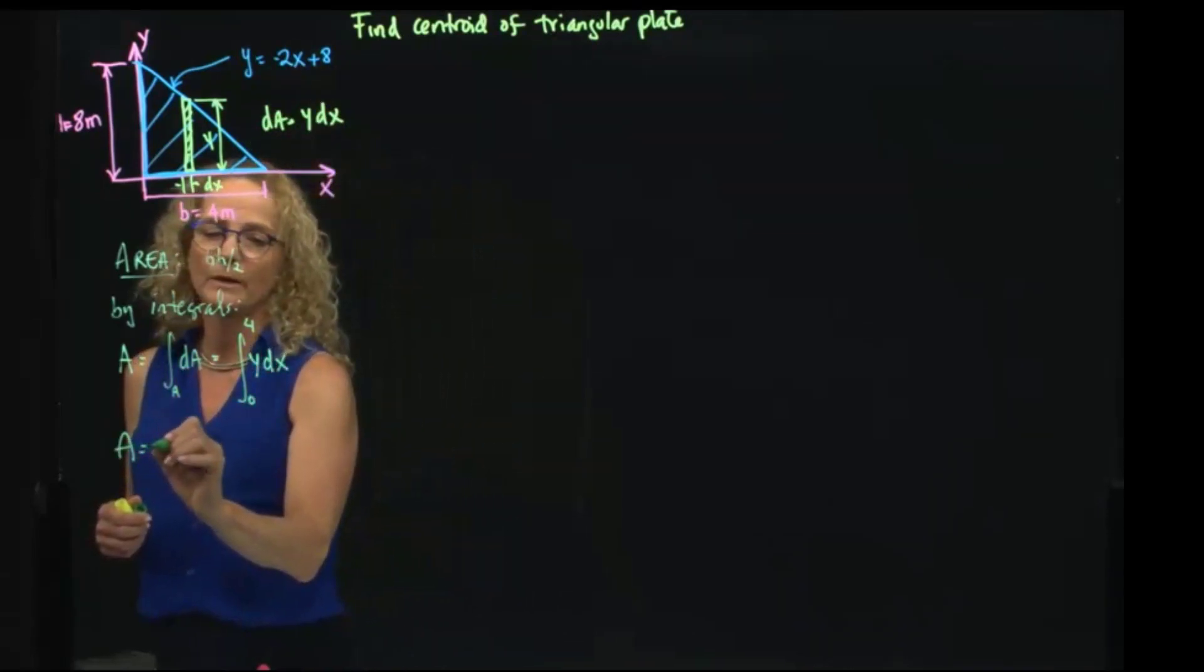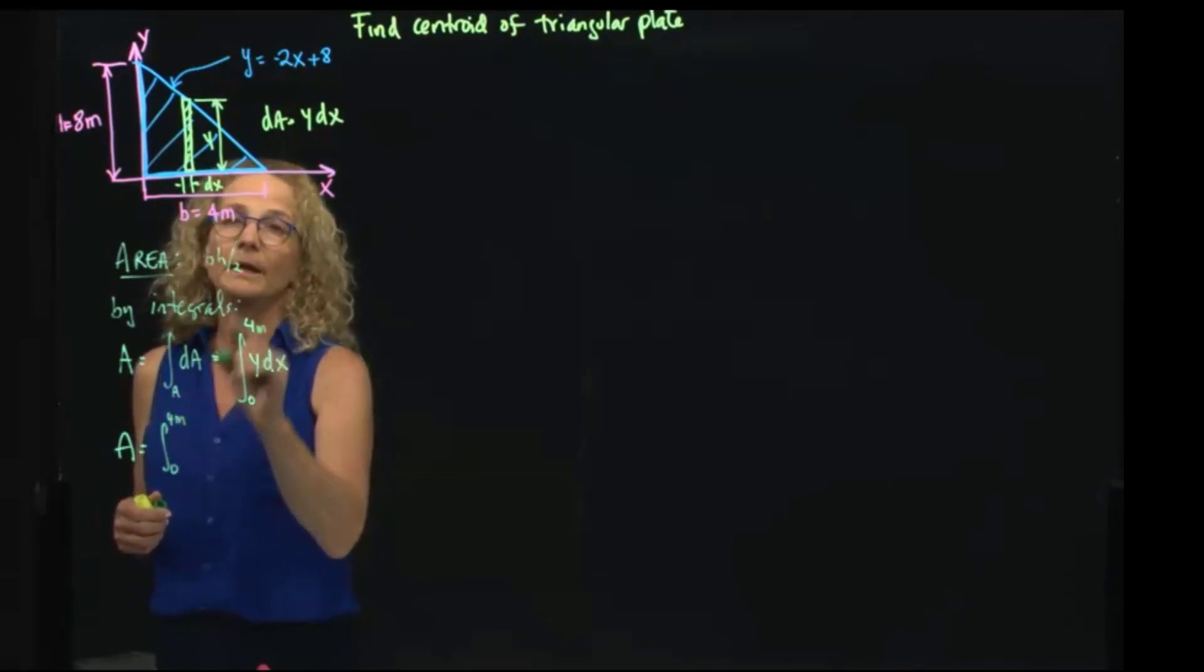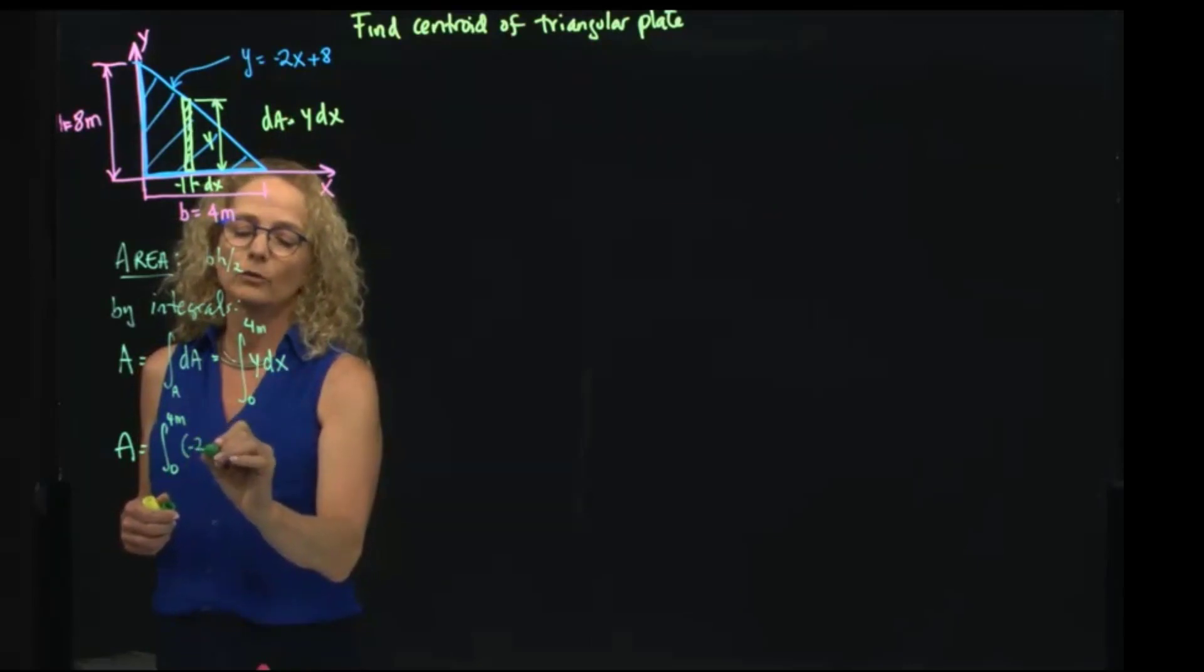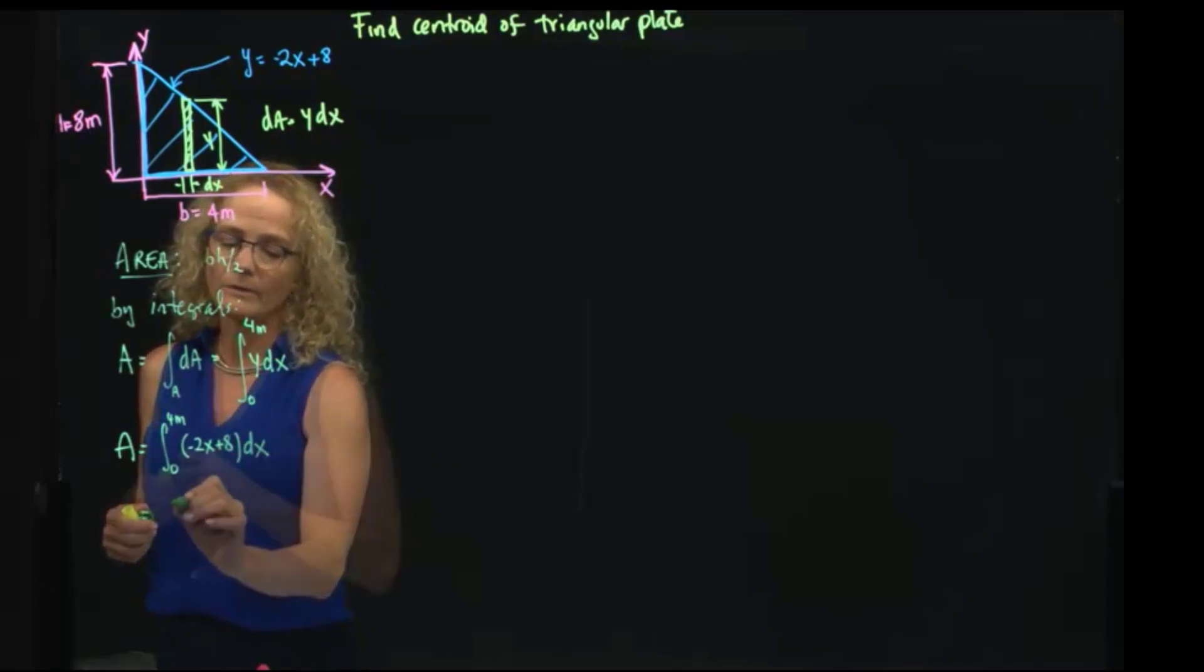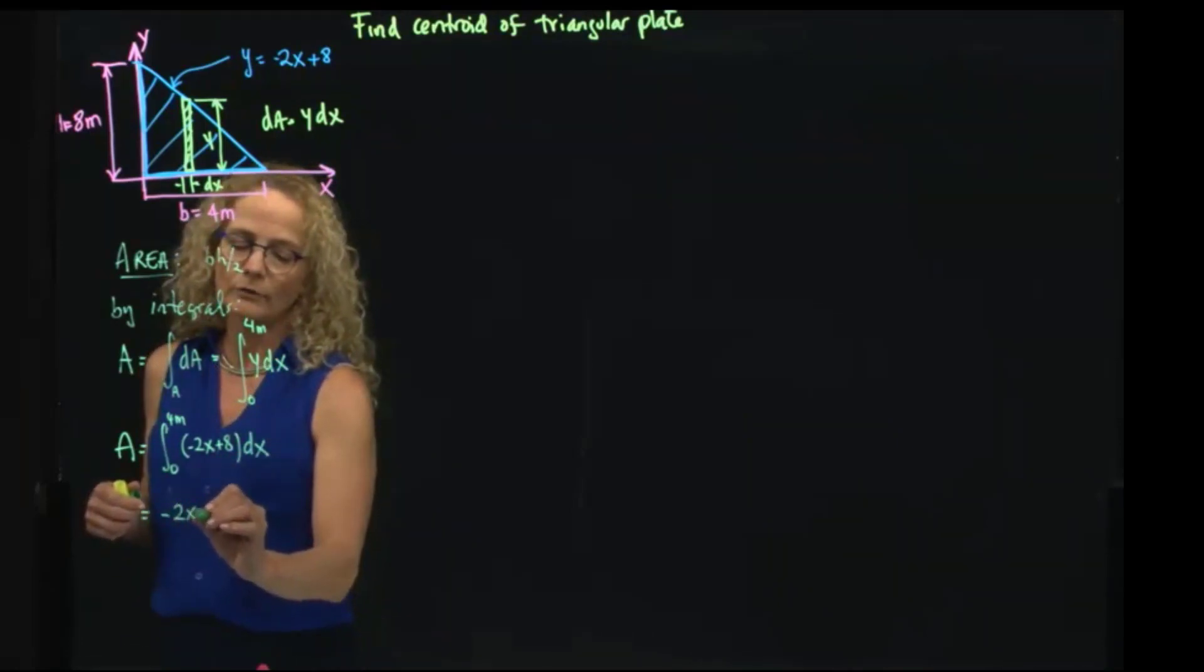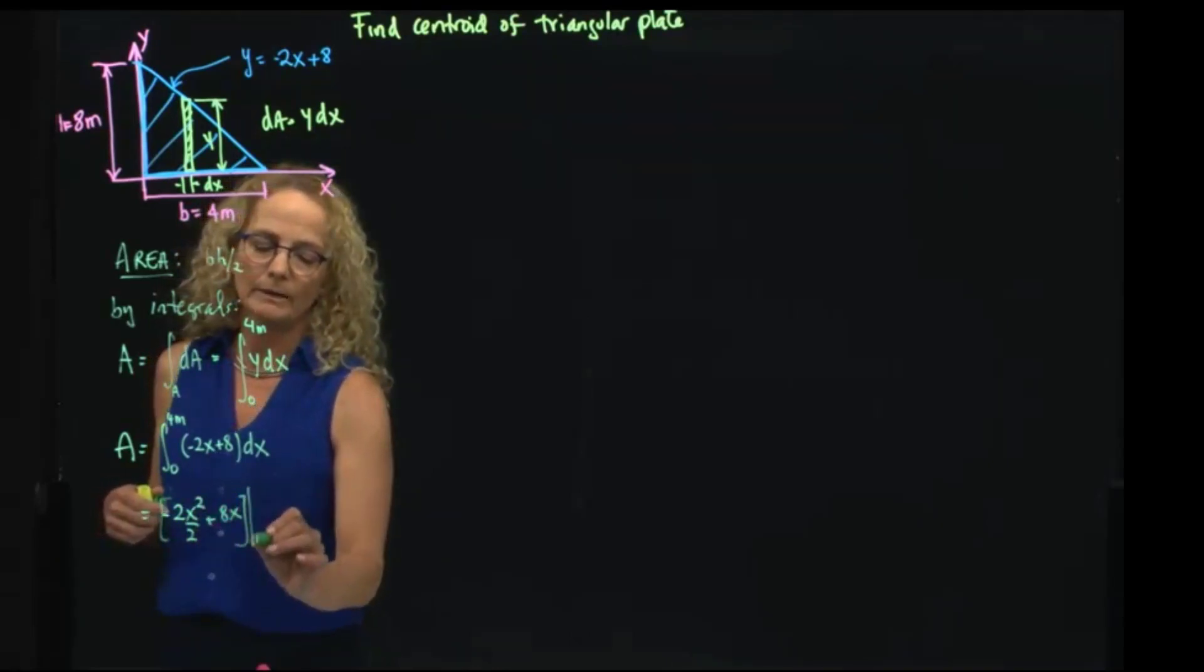My area will be from 0 to 4 meters. Y is negative 2X plus 8, dX. If I integrate that, it gives me negative 2X squared over 2 plus 8X, all that evaluated from 0 to 4 meters.